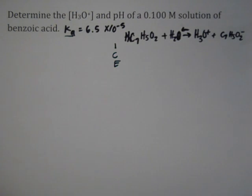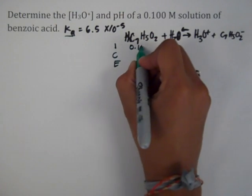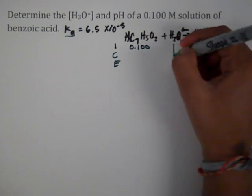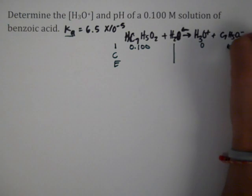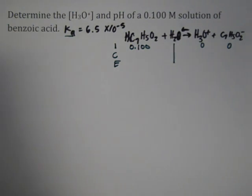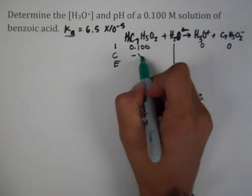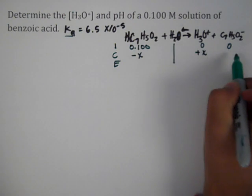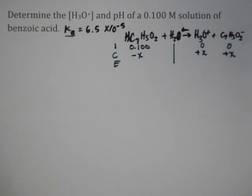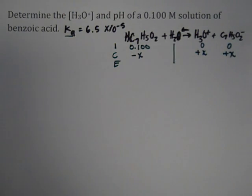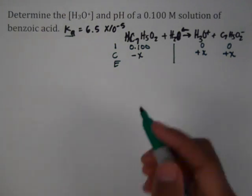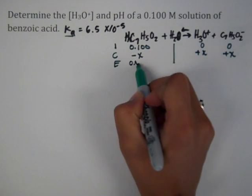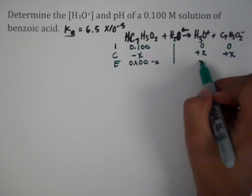We're just going to fill it in real quick. Our initial, we don't ever put water because it's a liquid, zero and zero. And then reactants are always a negative x. These are all in one stoichiometric conversion, so we don't have to do coefficients. So our E is what we're worried about right now.